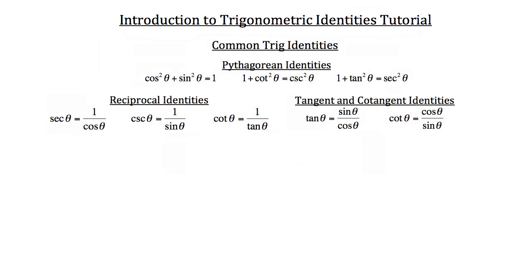The first thing you want to start with is the common trigonometric identities. These three groups are the three most common groups that you're going to deal with. First we have the Pythagorean identities — these are the three Pythagorean identities. What you need to know about these identities is simply that the statement on the left is equal to the statement on the right.